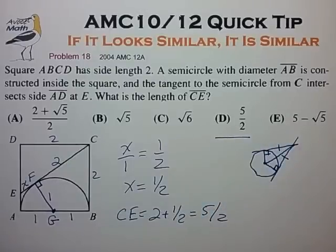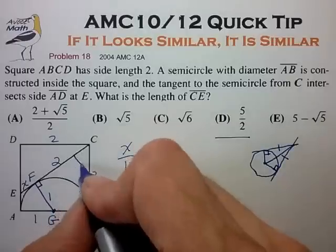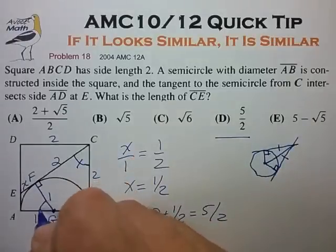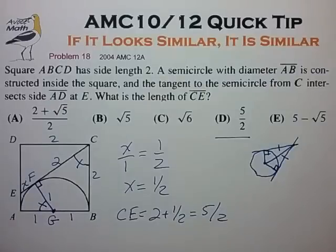Once the test is over you may want to ponder why these figures are in fact similar. You'll find that it comes down to showing that these two angles are in fact equal. See if you can work through that, and also check out the description section for links to other similarity-related AMC problem examples. Take care and see you in the next video.